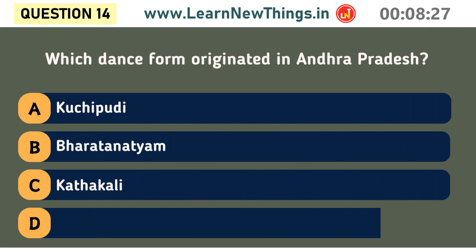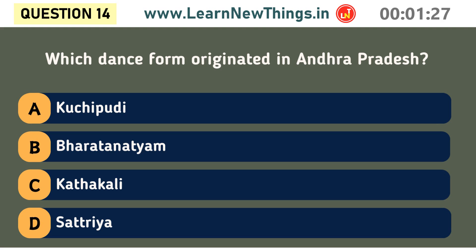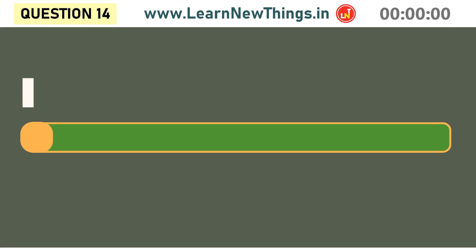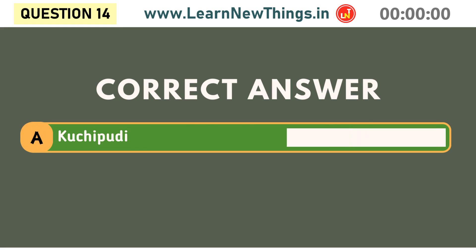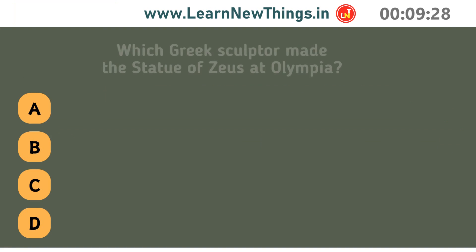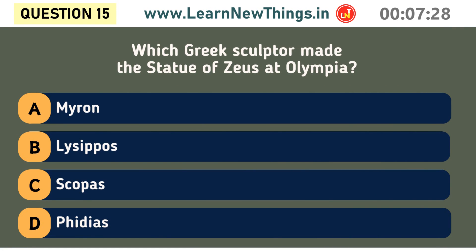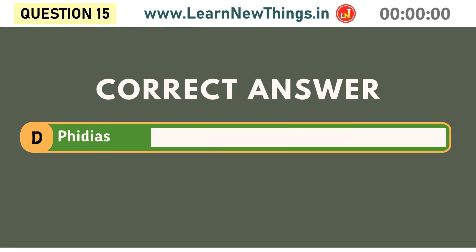Which dance form originated in Andhra Pradesh? Who sculpted the statue of Zeus at Olympia? Phidias.